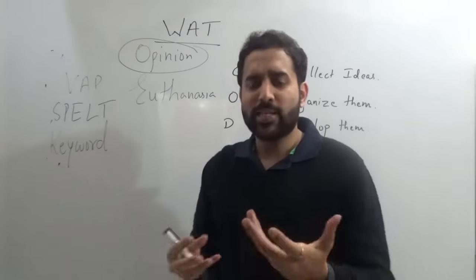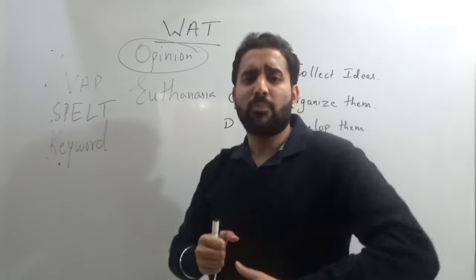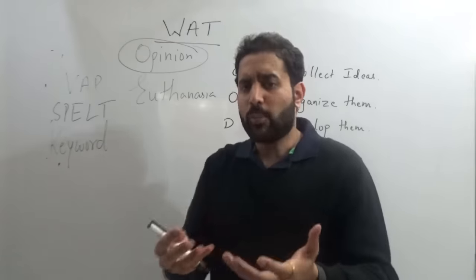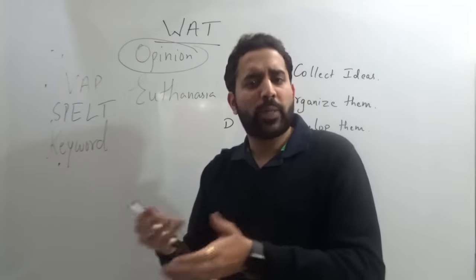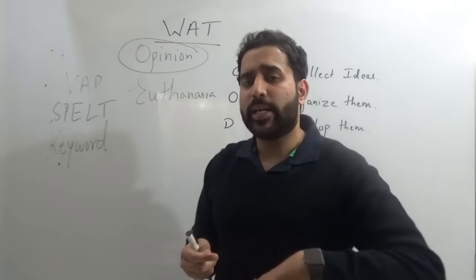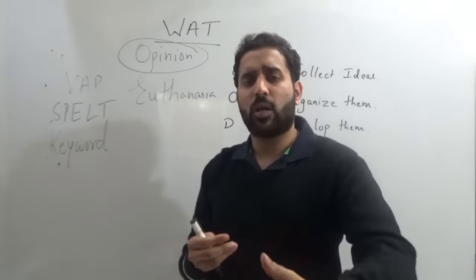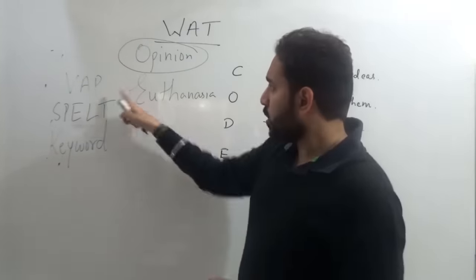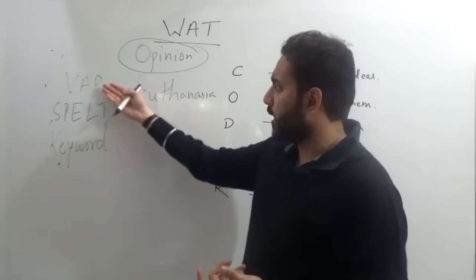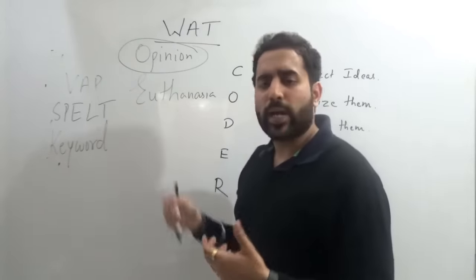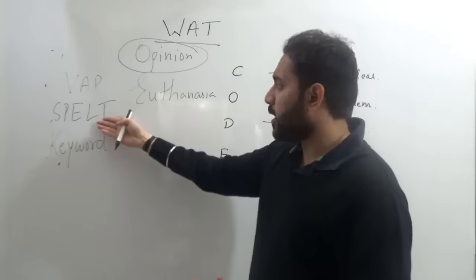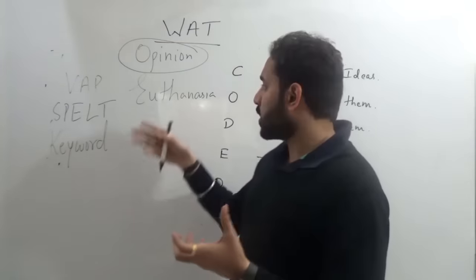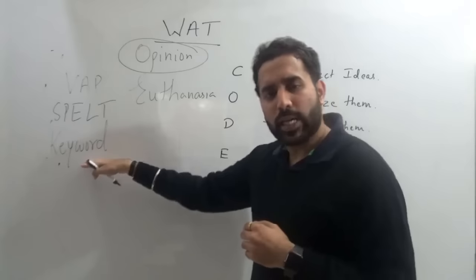You can also use the SPELT approach for euthanasia — for example, what does society think about it? Some countries oppose involuntary euthanasia. Euthanasia is legal in Canada, Belgium, and Switzerland. In India, passive euthanasia was made legal in March 2018. So for a single-word topic like this, you can go with the View of Affected Parties or the SPELT approach, covering the legal aspects and more.